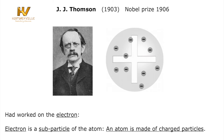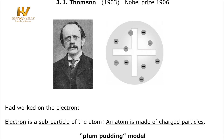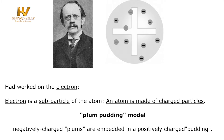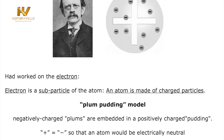Hundreds of years earlier, Dalton had proposed that atoms were neutral solid spheres, but Thompson's experiment disproved Dalton's theory. In 1898, Thompson proposed his model of the atom, which advocated that electrons and protons were haphazardly placed all through the atom. He called the theory the plum pudding theory. This theory was not accurate, but subsequently led to the discovery of the nucleus made by Ernest Rutherford.